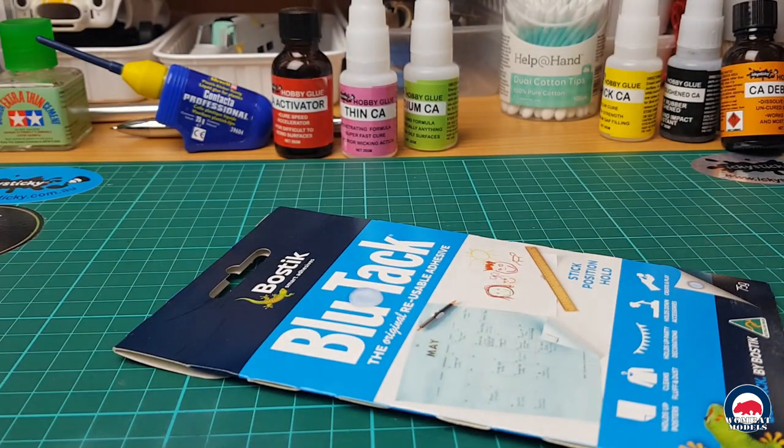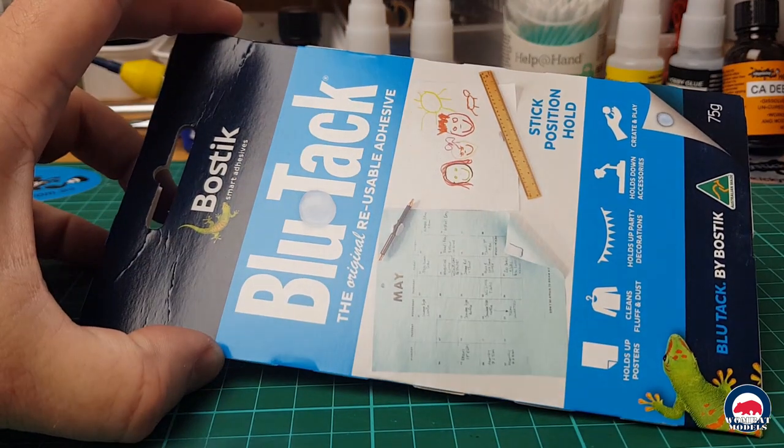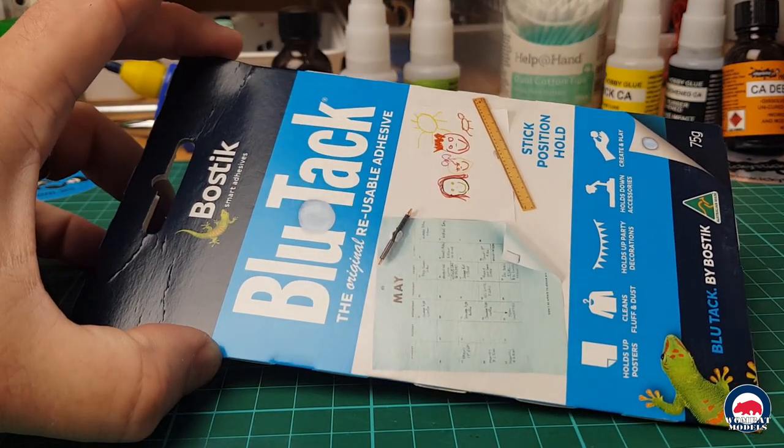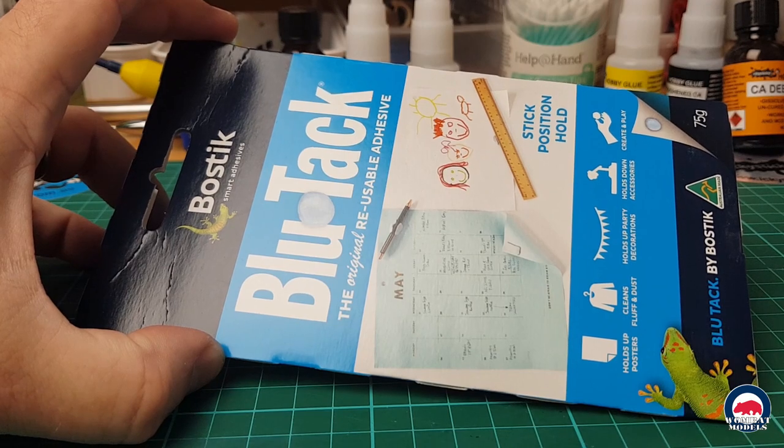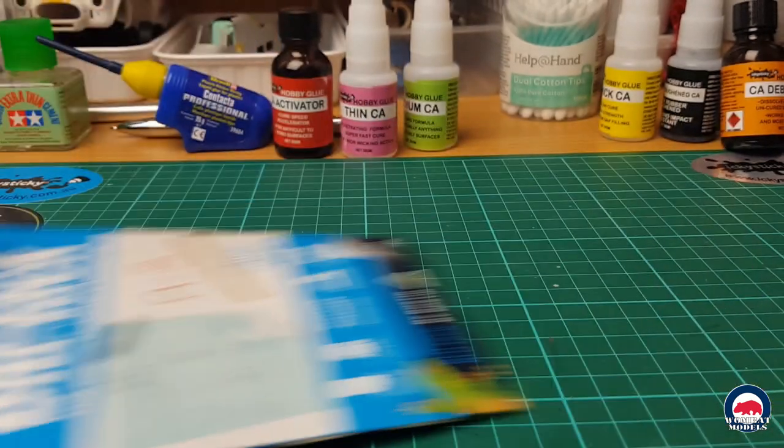Of course, good old blue tack. Fantastic for holding little bits together. Just tacking them when you're testing parts, but also it can be used, rolled out into ribbons when you're doing camouflage for painting and markings.